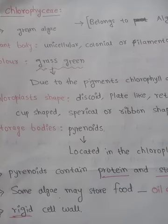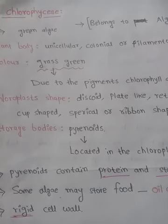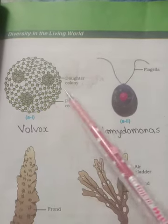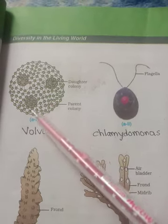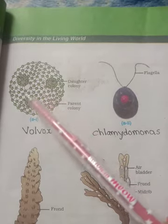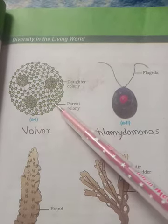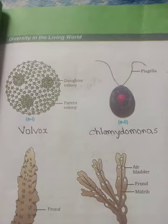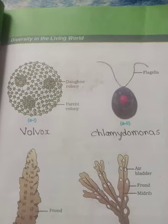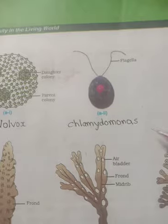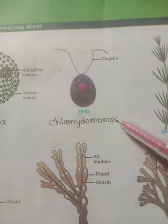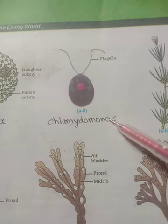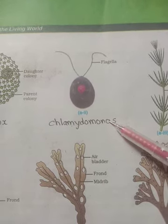Look at the picture of Volvox. Thousands of cells combine together to form a colony. Each cell in the colony is connected by cytoplasmic extensions. This is Chlamydomonas — this is the example of a unicellular Chlorophyceae member.